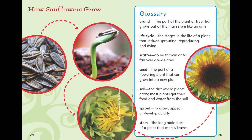Glossary. Branch: the part of the plant or tree that grows out of the main stem like an arm.